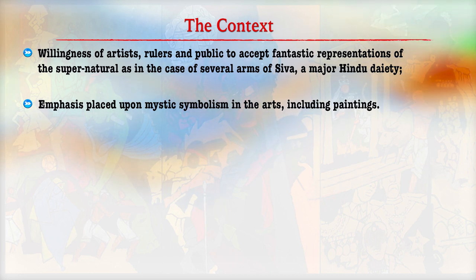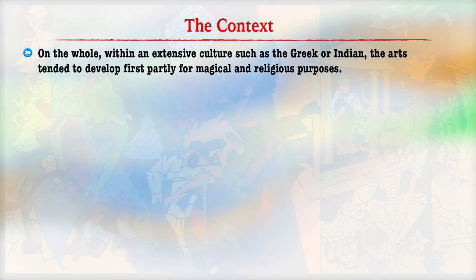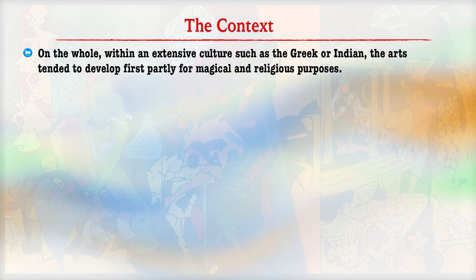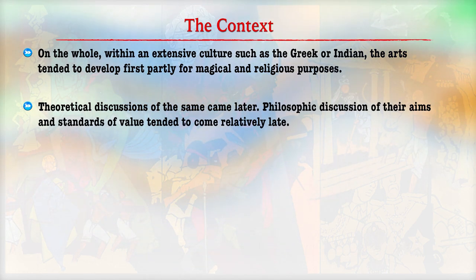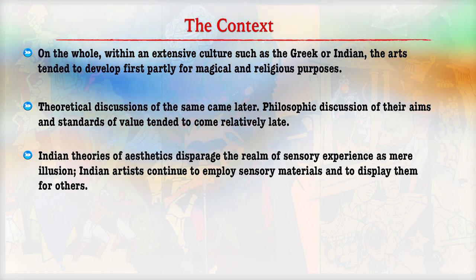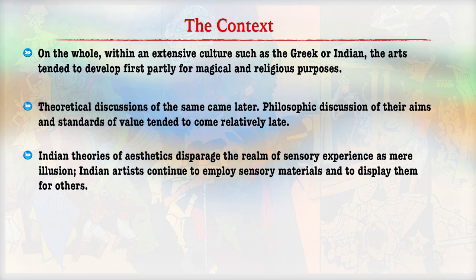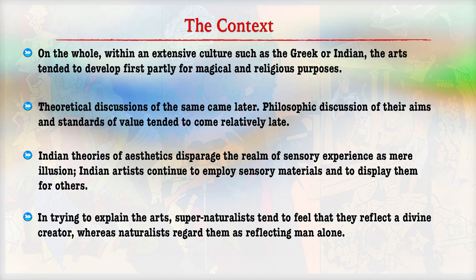An emphasis was placed upon mystic symbolism in the art including painting. Within an extensive culture such as Greek or Indian, the painting art tended to develop first partly for magical and religious purposes. We have theoretical and philosophical discussions available in various works which focus on the aim and standards of painting. Indian theories of aesthetics focus on the realm of sensory experience as mere illusions. Indian artists continued to employ sensory material and display them for others, focusing on supernatural powers. The paintings reflect a divine character, and another concept of this art is mystic symbolism.